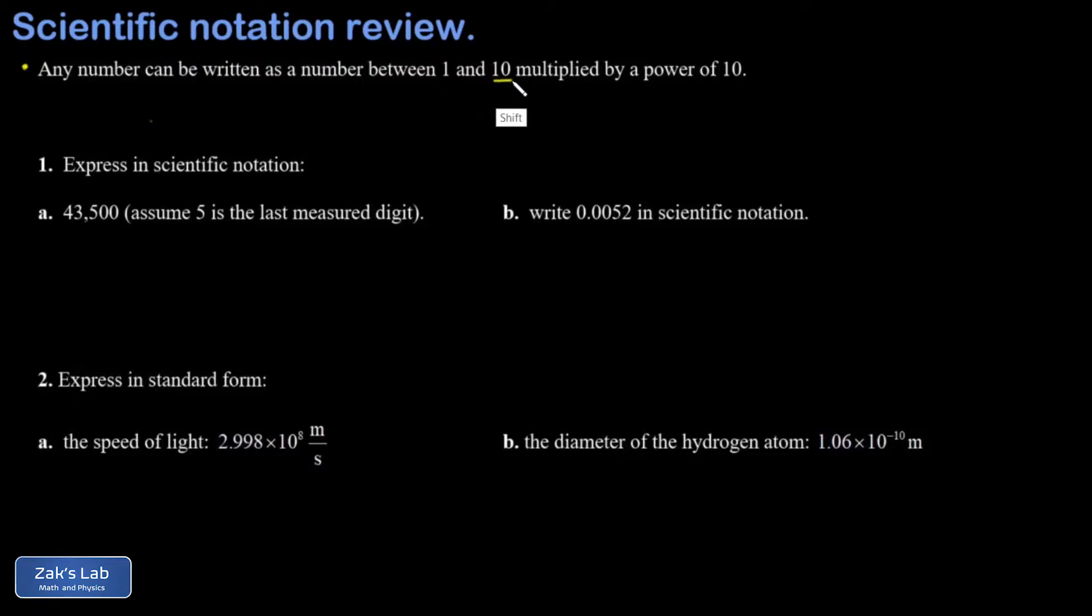When I say between 1 and 10, I'm not including 10 itself. So what we're talking about here is a single digit before the decimal point and then multiplied by 10 to some power.